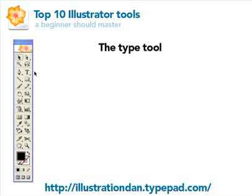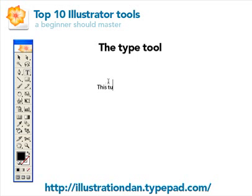The first option is the type tool and it's very basic. If you've ever composed an email or used a word processor like Microsoft Word, you have used the type tool. There are two ways to create type. The first is you basically just click and start typing — for example: 'This tutorial is awesome.'